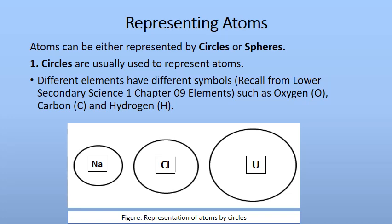In the picture on screen you can see atoms of sodium, chlorine, and uranium represented as circles of different sizes. Can you tell why the circles are of different sizes? The answer is that it depends on their mass and the number of protons and electrons in an atom. Smaller atoms have lesser mass; bigger atoms have greater mass. From sodium, chlorine, and uranium, sodium has the smallest mass and uranium has the largest mass.